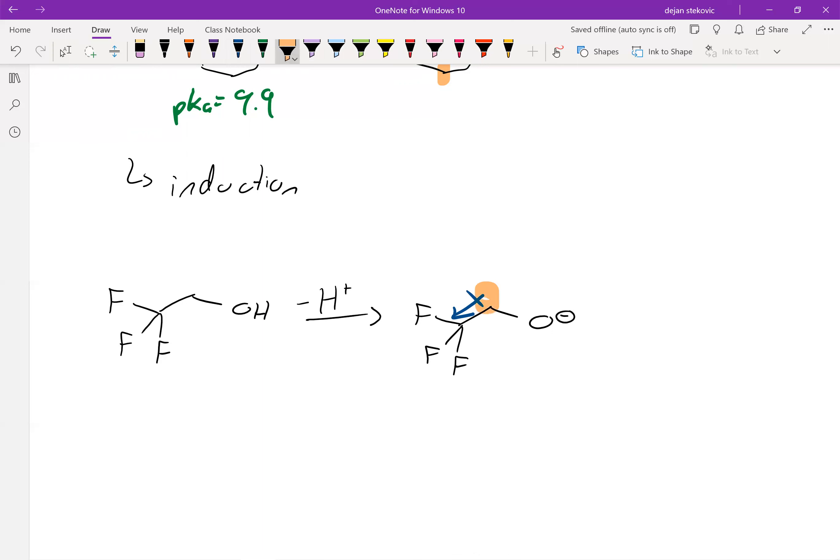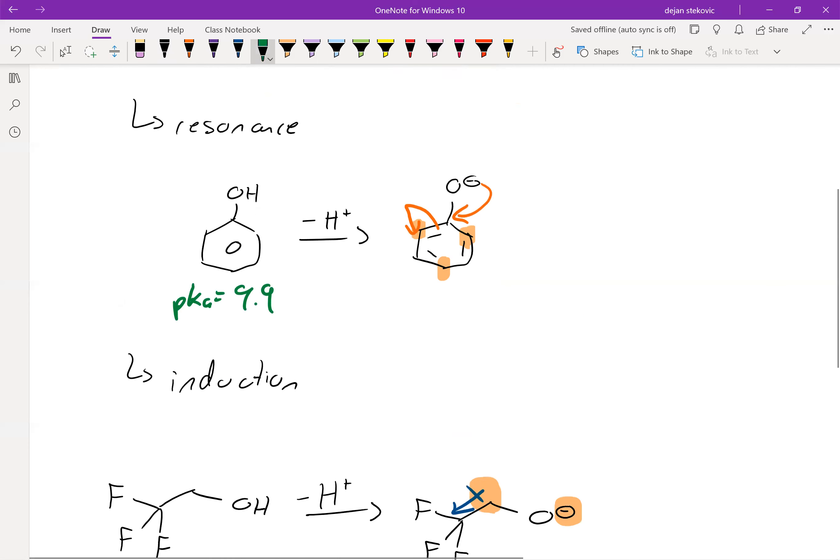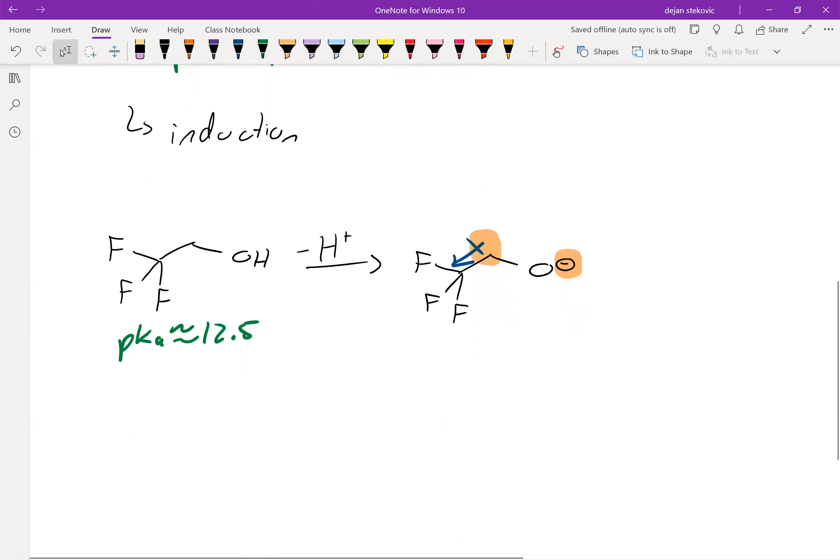And this partial positive carbon and negative oxygen are a stabilizing force. We have a positive and a negative, they attract each other, they help stabilize each other. And to see the effect right here, this pKa is equal to approximately 12.5. So that's a difference of about three and a half from 16.